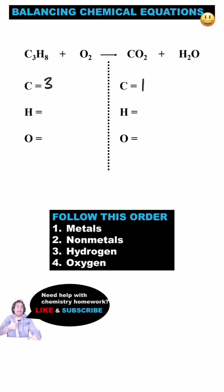There are three on the reactant side and one on the products, there's eight hydrogen on the reactant and two on the products, and there's two oxygen on the reactant side and three on the products. Two oxygen atoms in the CO2 and one in the H2O. To balance carbon,